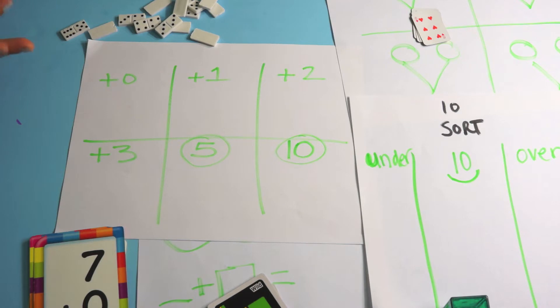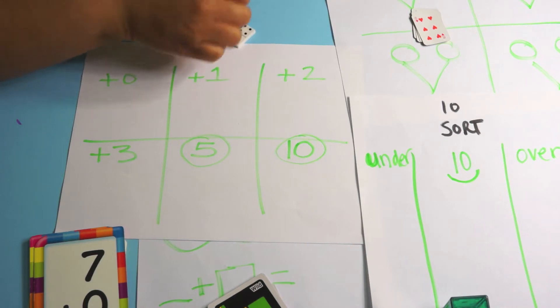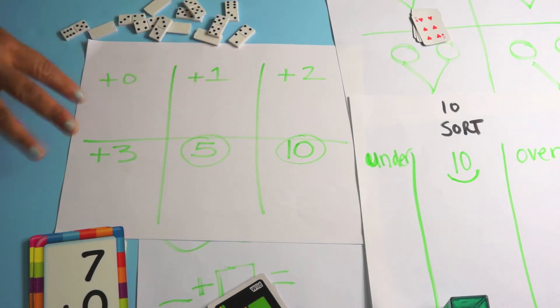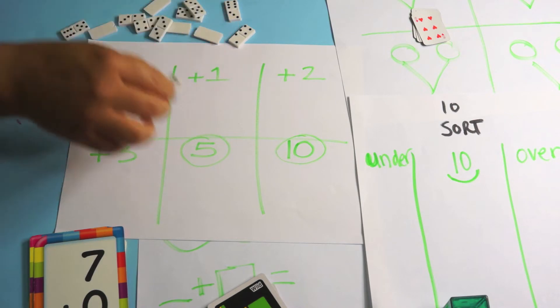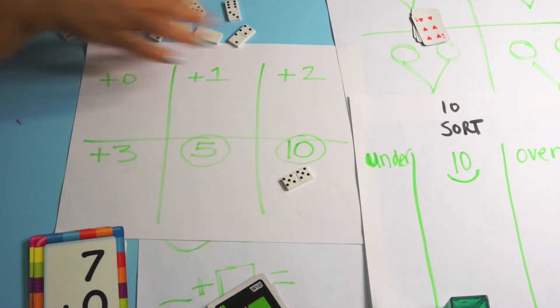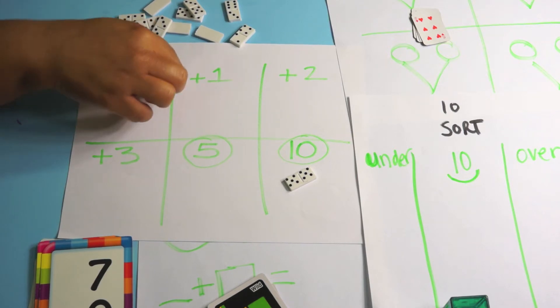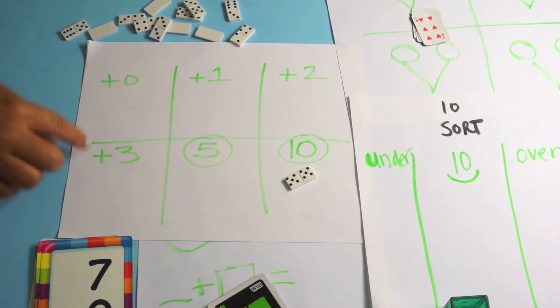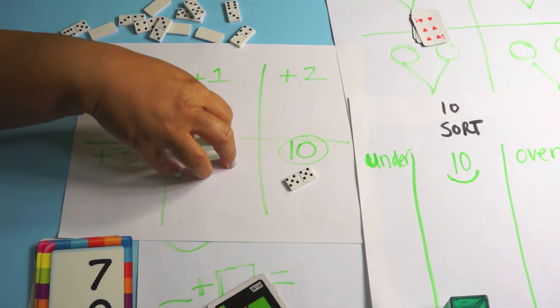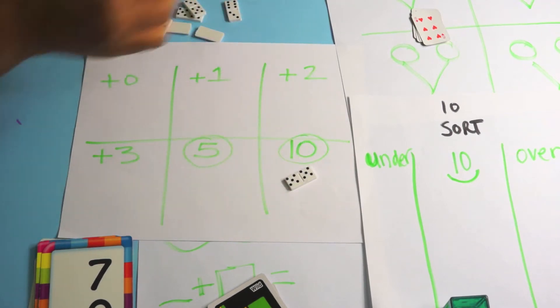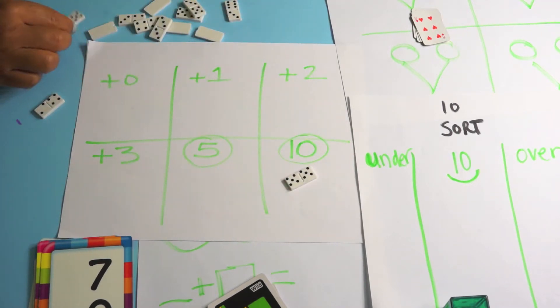One is a version of domino parking lot, but this time you're taking the dominoes and sorting them, looking for dominoes that make 10. Anything else doesn't go. You can't go in the parking lot unless you're a plus zero fact, a plus one fact, a plus two fact, a plus three fact, or you make five or you make 10. So four plus two is six, can't go in the parking lot. Six plus five is eleven, it can't go in the parking lot.